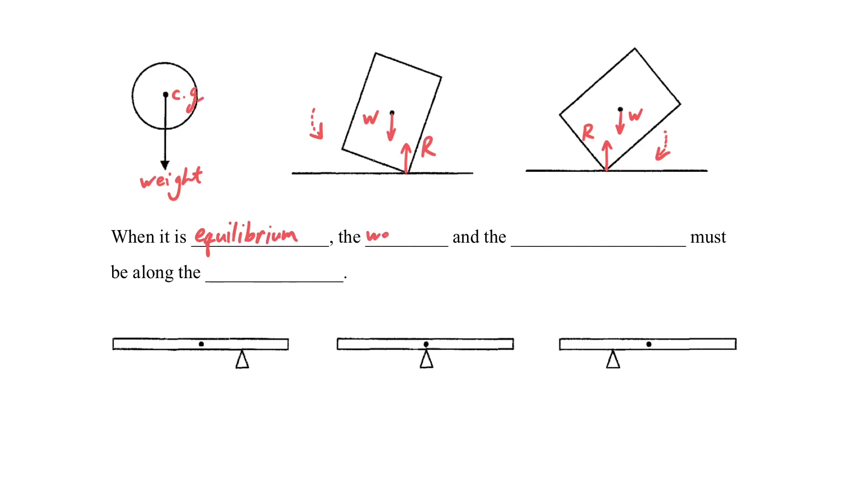In order to achieve equilibrium, the weight and normal reaction must be along the same line.